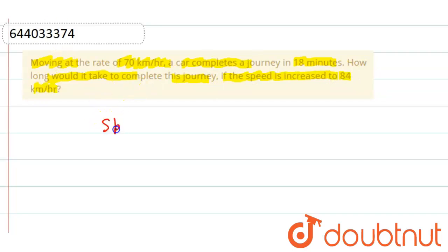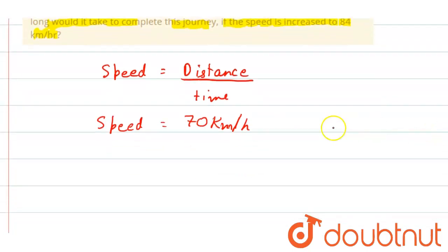So now we know the formula for speed, that is speed equals distance by time, right? So we know speed is 70 km per hour. Time is 18 minutes, so we can write 18 by 60.